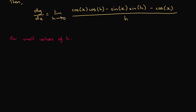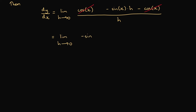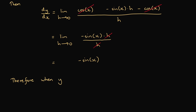Again, for small values of h we use the approximations sin h ≈ h and cos h ≈ 1. Then dy/dx equals the limit as h approaches 0 of [cos x times 1 minus sin x times h minus cos x] all over h. The cos x terms cancel in the numerator, giving the limit as h approaches 0 of [minus sin x times h] divided by h. The h cancels, leaving the limit as h approaches 0 of minus sin x. Since there are no h's, we remove the limit operator, giving minus sin x. Therefore, when y equals cosine x, dy/dx equals minus sine x.